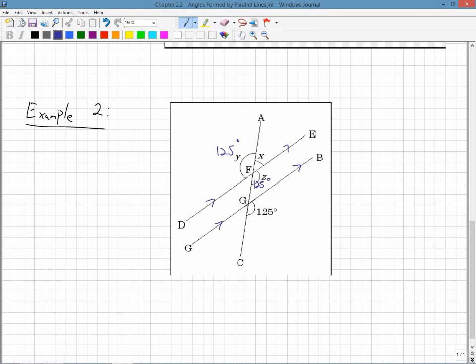And I can see that this angle X here and this angle Y form an entire line. That means they're supplementary. They have to add up to 180, which means that angle X must be 55 degrees. Because if we take 180, subtract off 125, you will get 55 degrees.